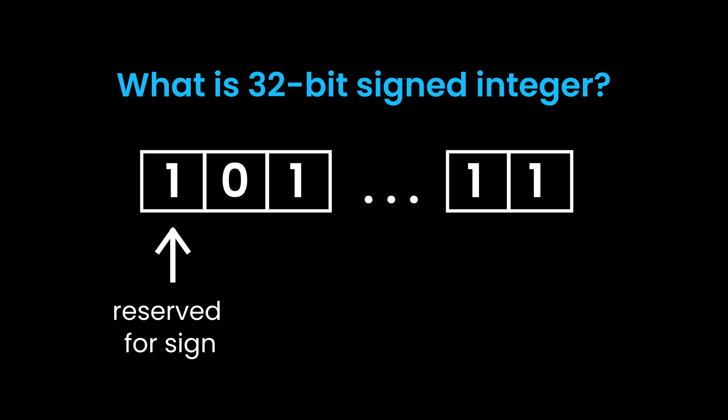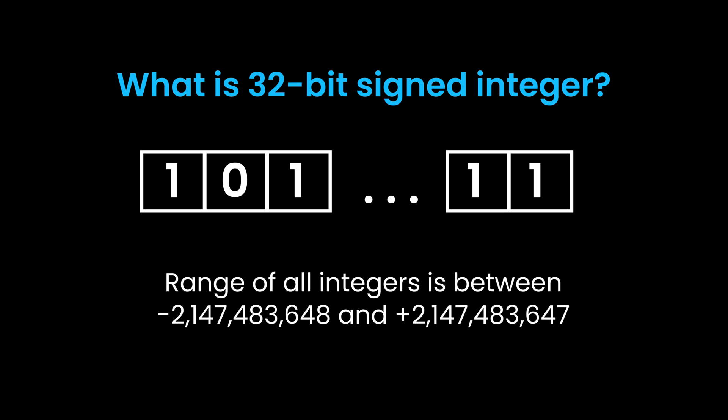If the sign bit is 0, the number is positive; if it's 1, the number is negative. This basically means the number you can store in an integer ranges anywhere from negative 2 billion to positive 2 billion. You want to keep this in mind when reversing the integer so you don't exceed this limit and get an out-of-bounds error.